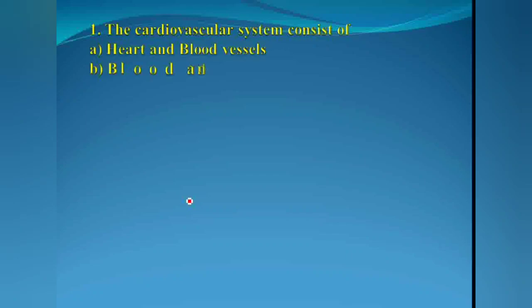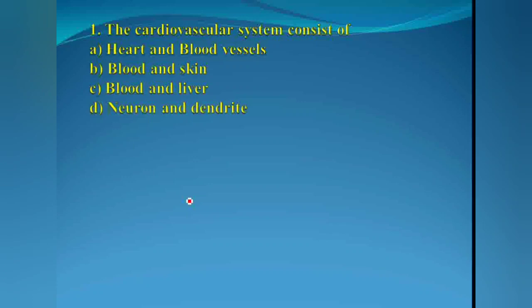The cardiovascular system consists of: blood and skin, blood and liver, neuron and dendrite, or heart and blood vessels. The answer is heart and blood vessels.